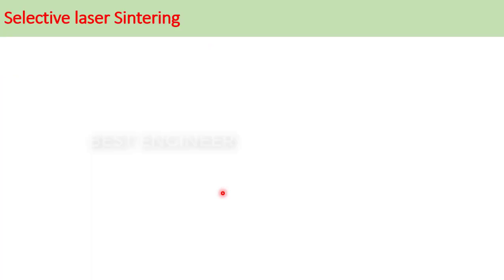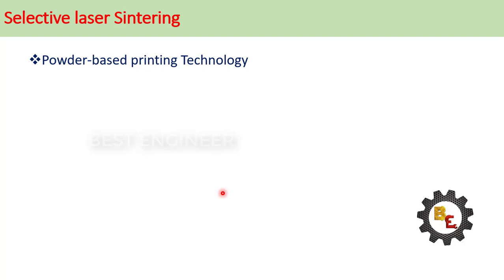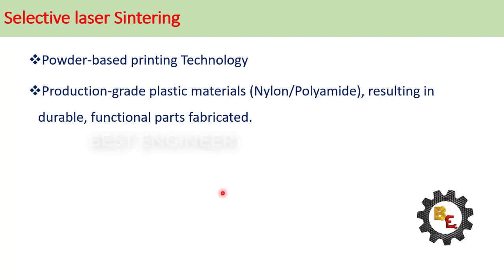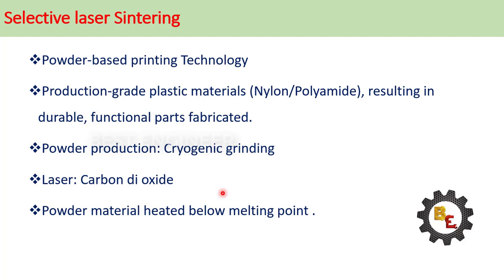SLS is a powder based printing technology. Here we are using production grade plastic materials such as nylon and polyamide, so we can fabricate functional parts. These powder materials are produced using cryogenic grinding method. We are using carbon dioxide laser to heat the powder particles below the melting point and make bonding.